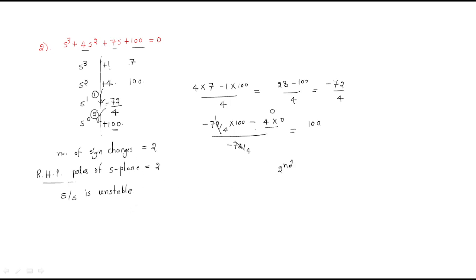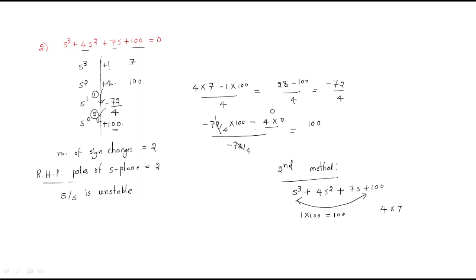Whenever poles are in the right-hand side, the system is unstable. We can also use the second method directly: for s³ + 4s² + 7s + 100, the outside product is 1×100 = 100 and the inside product is 4×7 = 28.